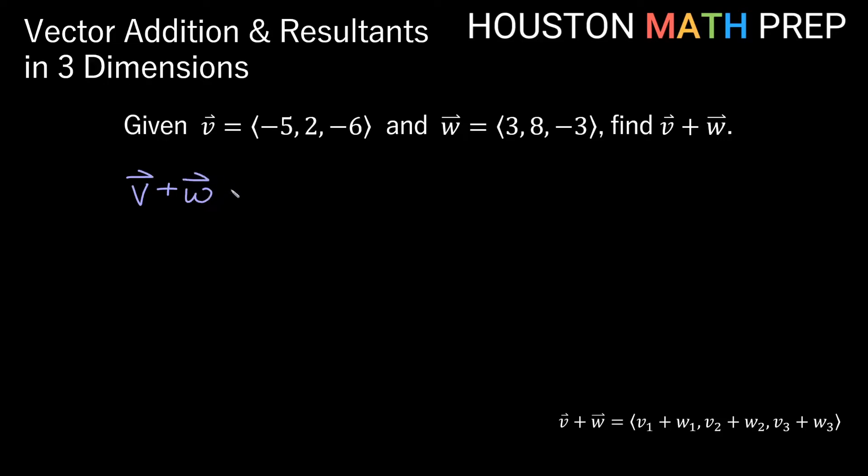So V plus W is going to be the vector that adds their X components. So negative 5 plus 3 for the X component. For the Y component, 2 plus 8. And for the Z component, negative 6 plus negative 3.